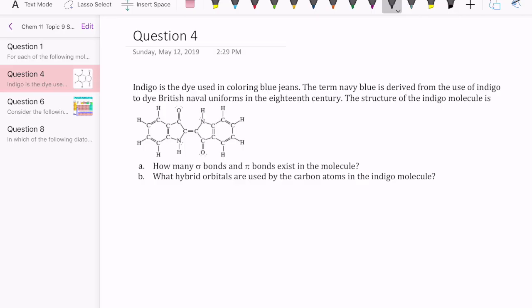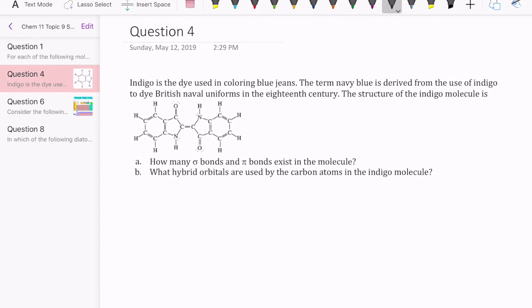Okay, let's take a look at question 4 in topic set 9, CHEM 11. This is a question about pi and sigma bonds in the valence bond model, and also a question about hybrid orbitals, which is a concept in the valence bond model. The question gives you a molecule called indigo, which is a dye, and the structure is shown right here. And the question is, how many sigma and pi bonds exist in the molecule?